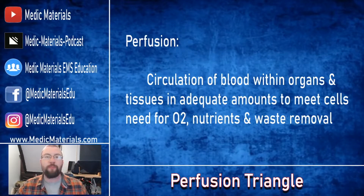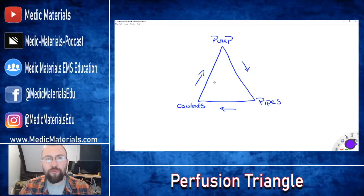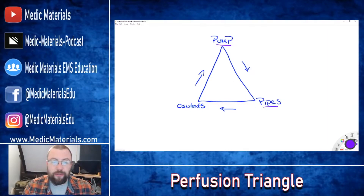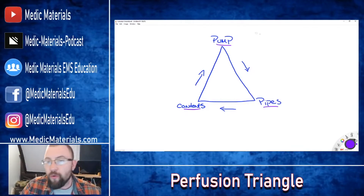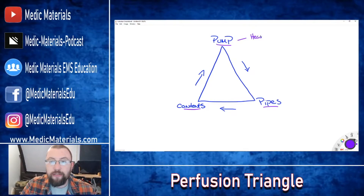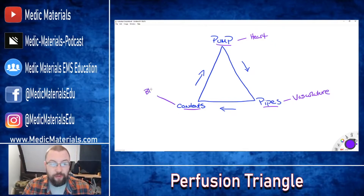So what is the perfusion triangle and how do we remember it? There are three main parts: you have the pump, the pipes, and the contents of the pipes. The pump is going to be the heart, the pipes are going to be the vasculature, and the contents are going to be the blood. Pretty simple stuff.